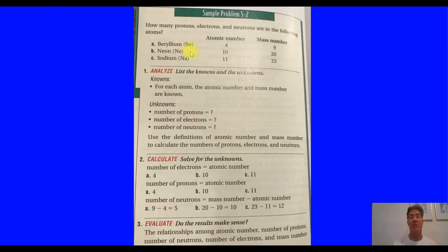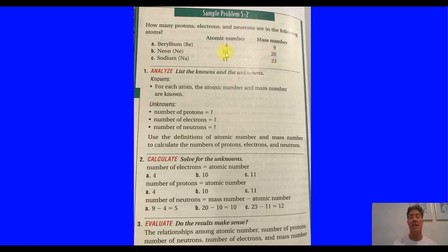Sample problem 5-2: how many protons, electrons, and neutrons are in the following atoms? Beryllium is atomic number 4 — 4 protons, 4 electrons, mass number 9, so 9 minus 4 equals 5 neutrons. Next: 10 protons, 10 electrons, 20 minus 10 gives us 10 neutrons. Sodium: 11 protons, 11 electrons, mass number 23, so 23 minus 11 gives you 12 neutrons.